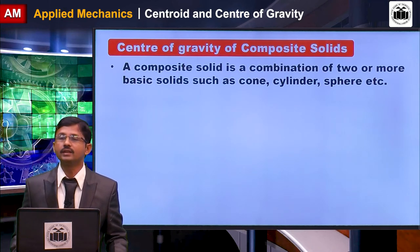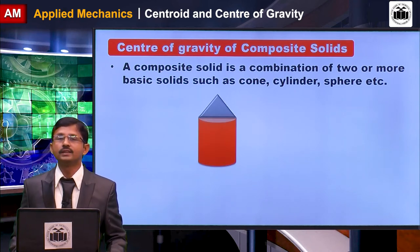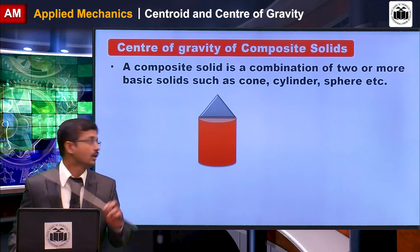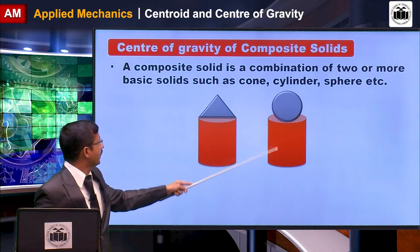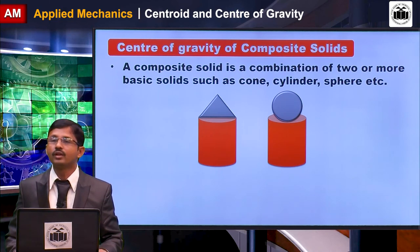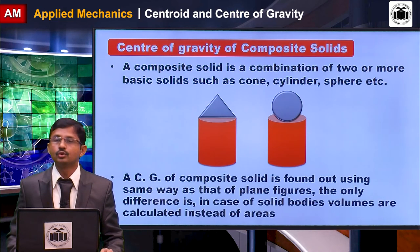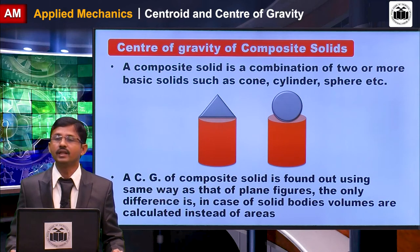A composite solid is a combination of two or more basic solids such as a cone, cylinder, sphere, etc. For example, one composite solid has a cylinder at the base and a cone at the top; another has a cylinder at the base and a sphere at the top. The center of gravity of composite solids is found in the same way as for plane figures, the only difference being that volumes are calculated instead of areas.